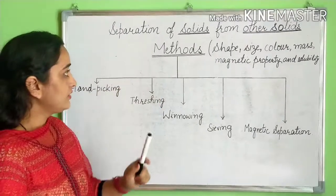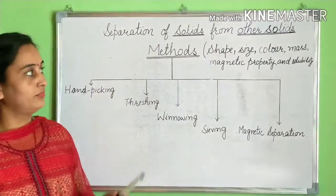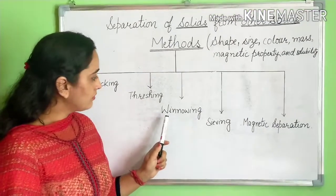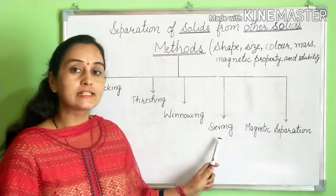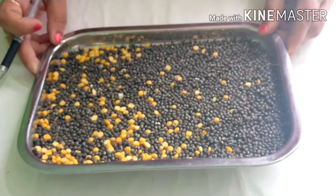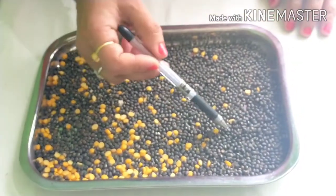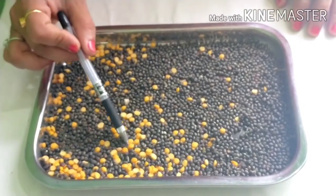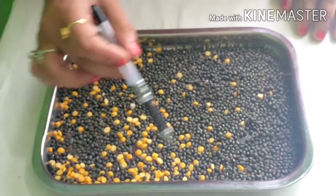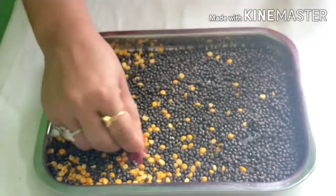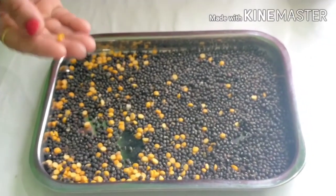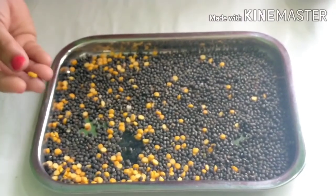For separation of solid components, the method depends upon the shape, size, color, mass, magnetic property, and solubility of the components. Methods for separating solids from other solids include hand picking, threshing, winnowing, sieving, and magnetic separation. For example, in a mixture of black and yellow pulses, we can apply the hand picking method to separate them one by one, because the particle size is quite large and visible to our naked eyes.